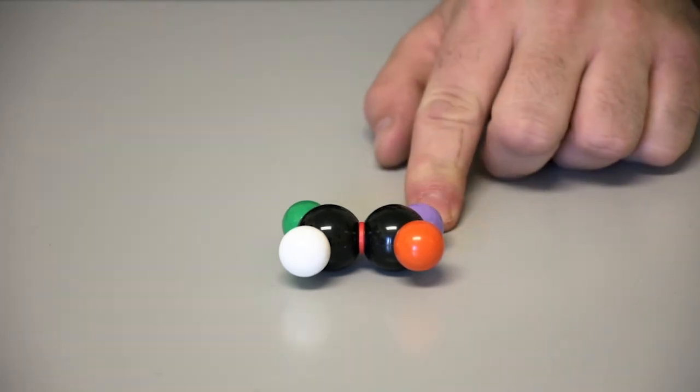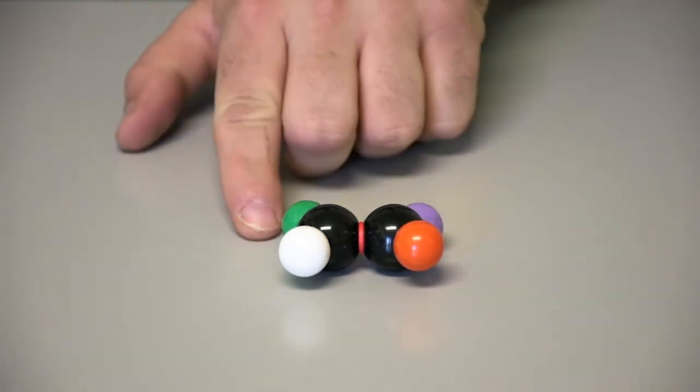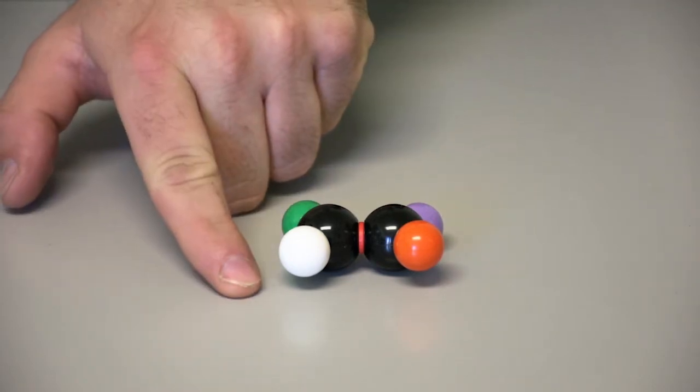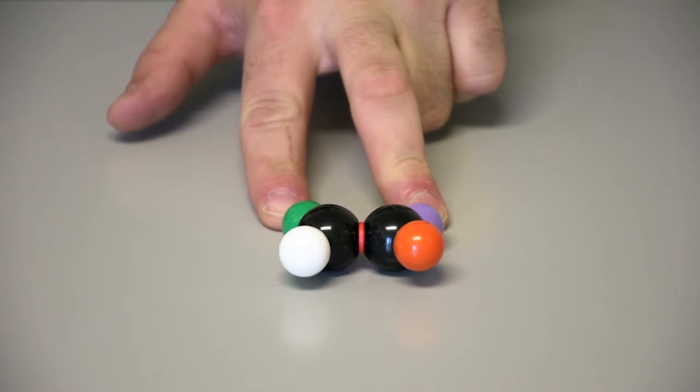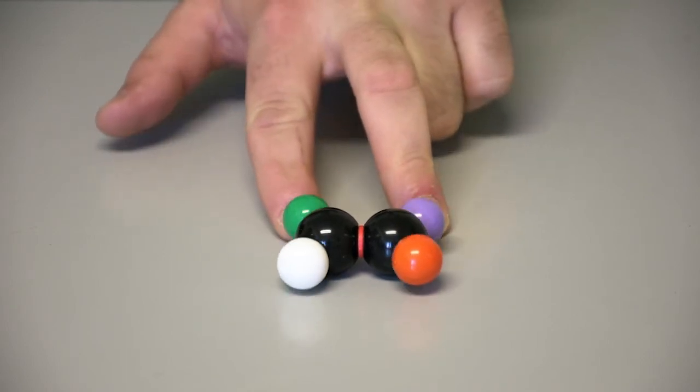Priority rules still apply. So, the iodine is higher priority than the bromine, and the chlorine is higher priority than the hydrogen. Thus, the iodine and chlorine are on the same side, so the Z isomer is shown.